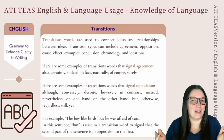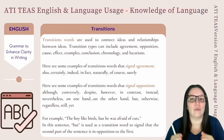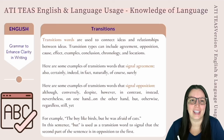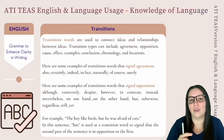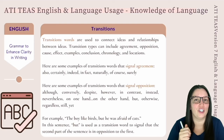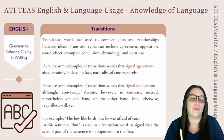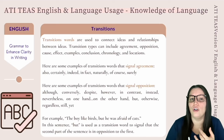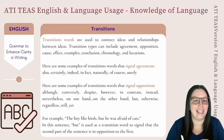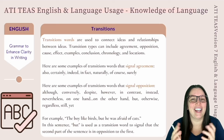Another great thing about sentences are transitions. Transition words are used to connect ideas and relationships between ideas. Transition types can include agreement, opposition, cause, effect, examples, conclusion, chronology, as well as locations. Here are some examples of transition words that signal agreement: also, certainly, indeed, in fact, naturally, of course, and surely.